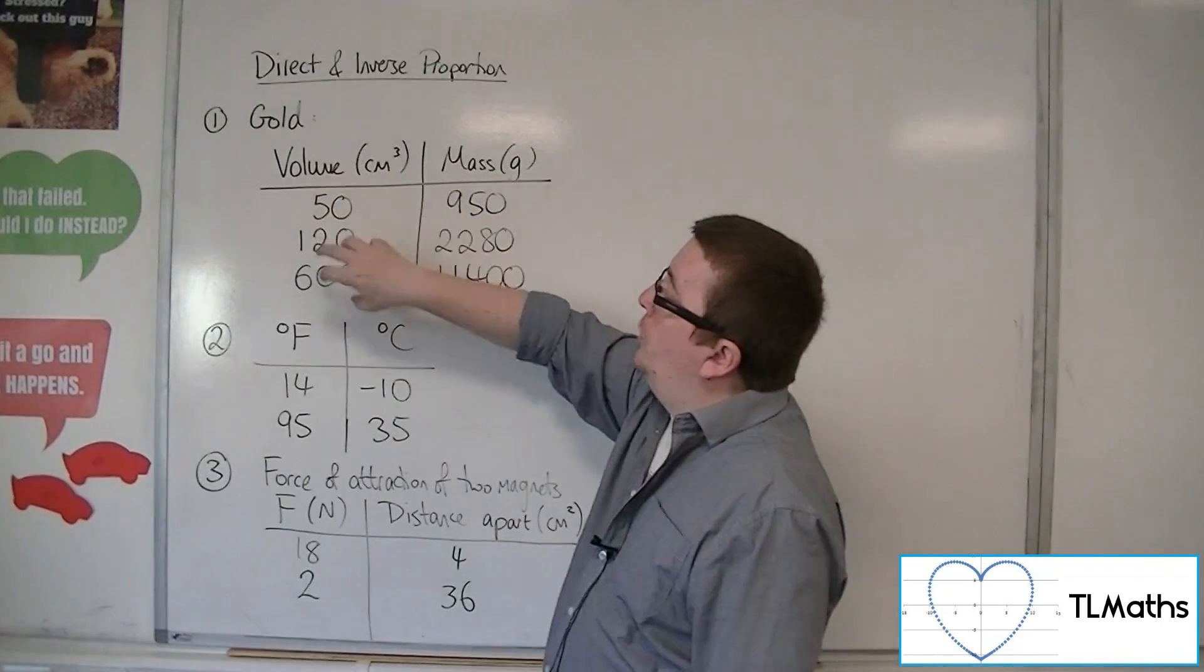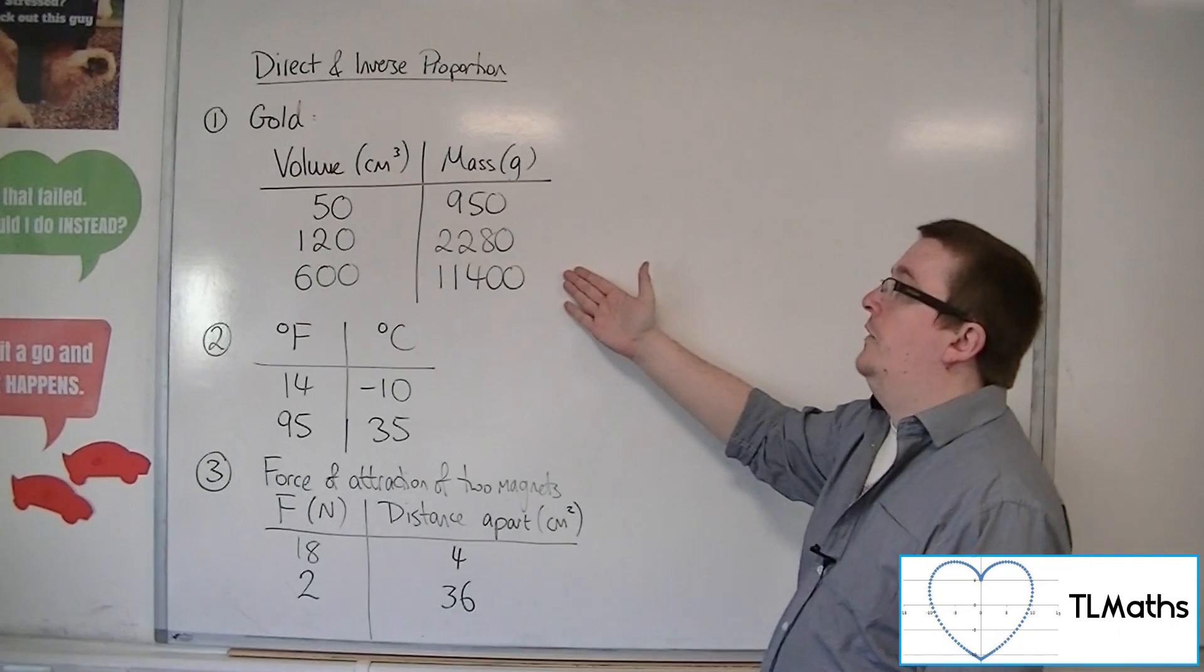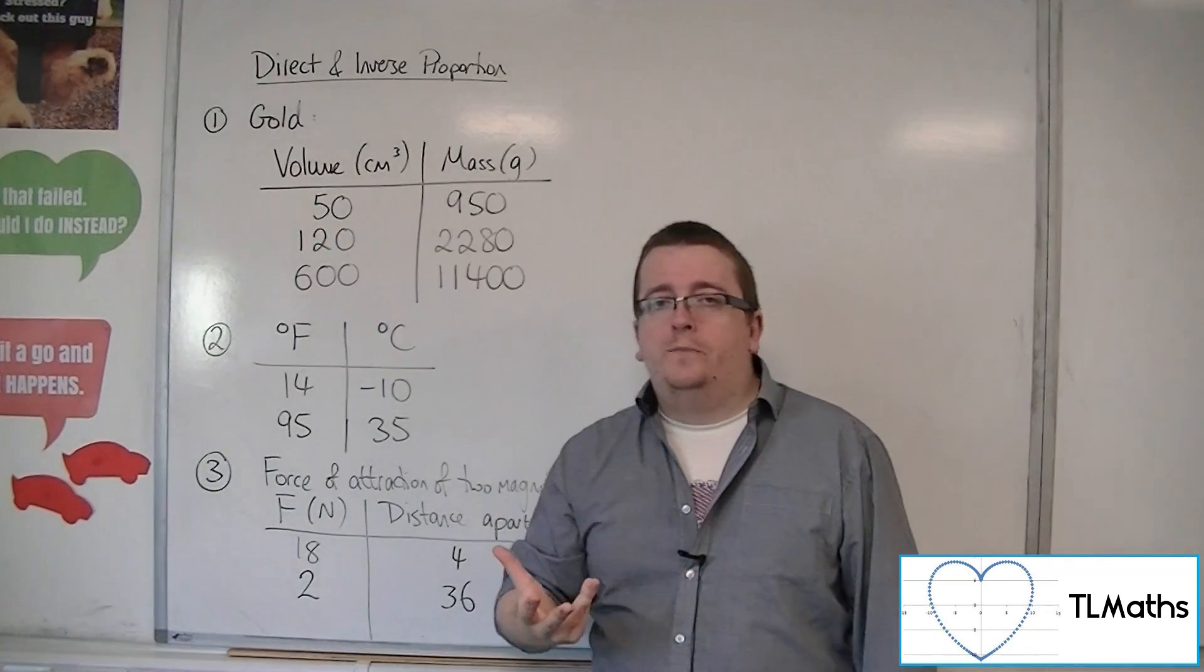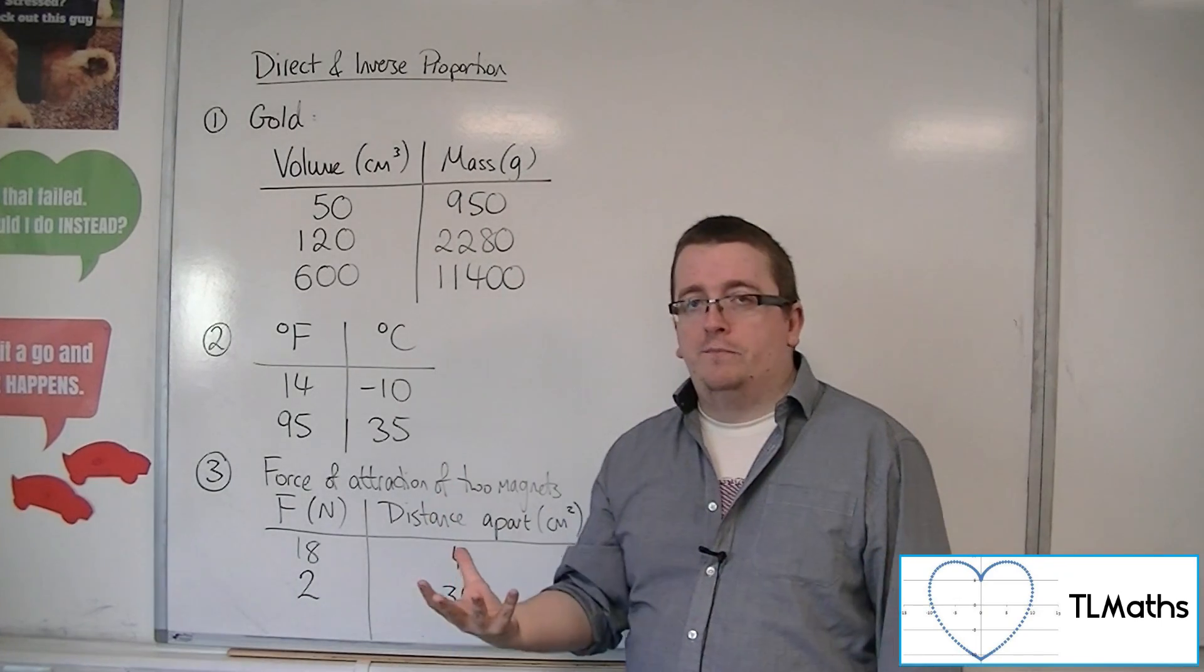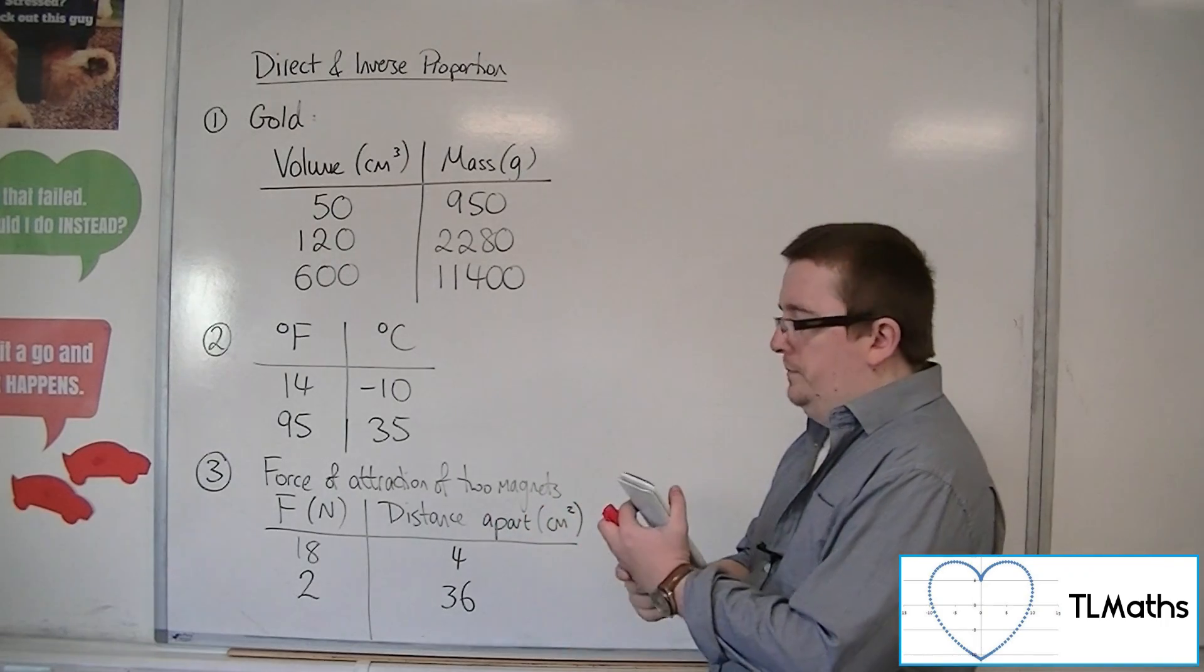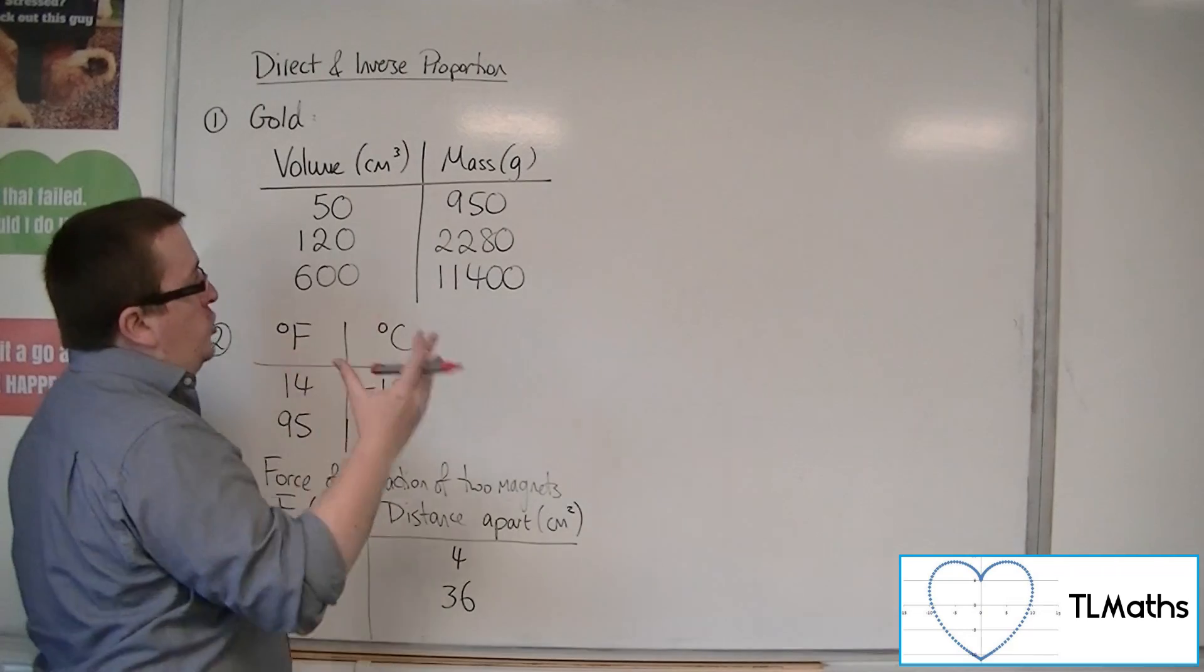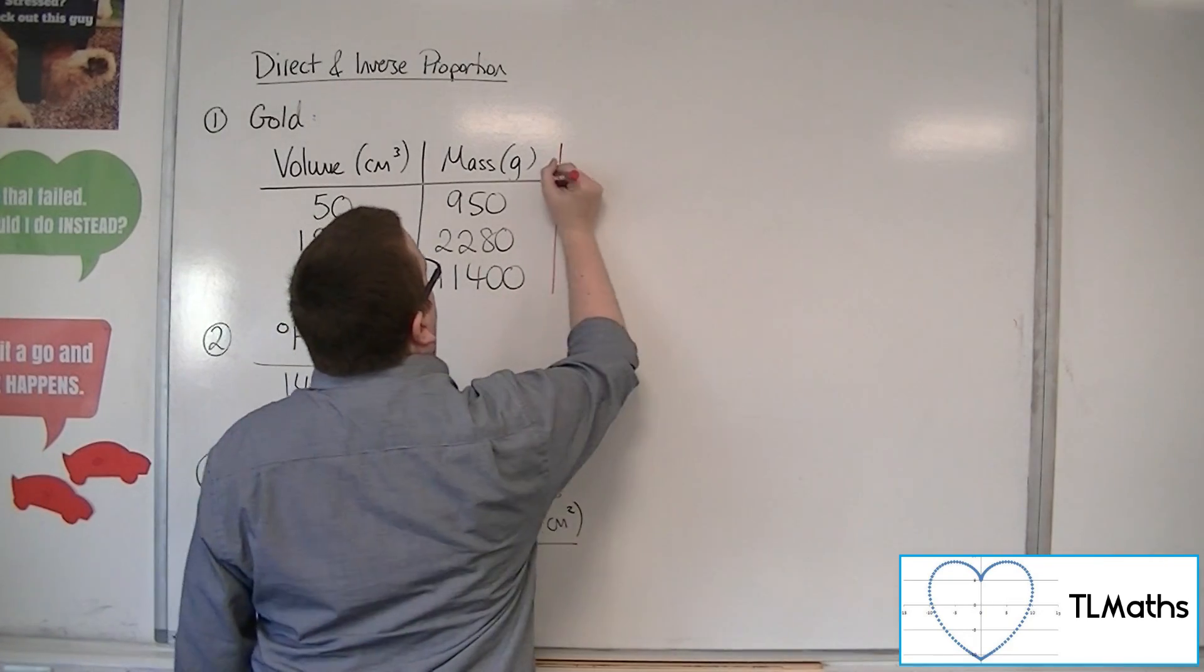We've got its volumes given in cubic centimeters and the masses. And what I want to show is that mass is directly proportional to the volume. So what you can do to find this, I'll just show it, is by calculating density.